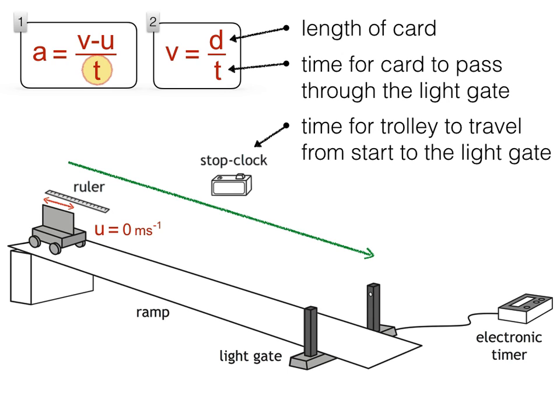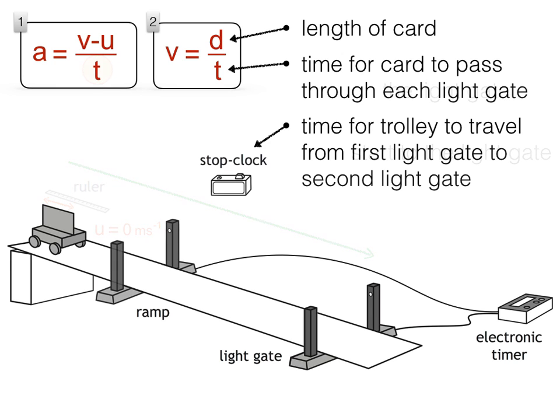This answers the question then. But let's look at other ways the equipment could have been set up. This diagram shows a similar setup, except there are now two light gates.